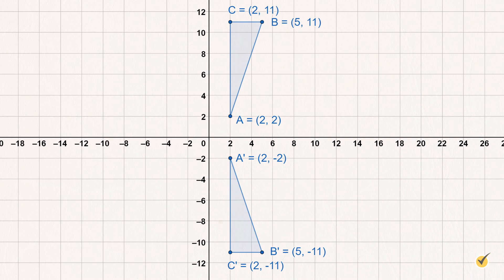Three common ways to reflect figures are over the x-axis, y-axis, and the line y equals x. Something to notice as we look at these is that the signs of the coordinates change. For example, when a figure is reflected over the x-axis, notice the y-coordinates change sign.